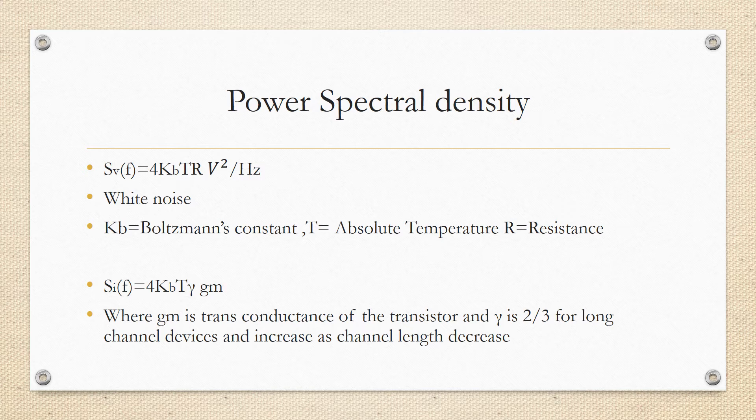In a MOSFET transistor, they also generate thermal noise due to channel resistance. This noise is typically modeled as a current source In between source and drain nodes with a power spectral density given as S(f) = 4KbTγgm, where gm is transconductance of the transistor and coefficient γ is approximately two-thirds for long channel devices and increases as channel length decreases.